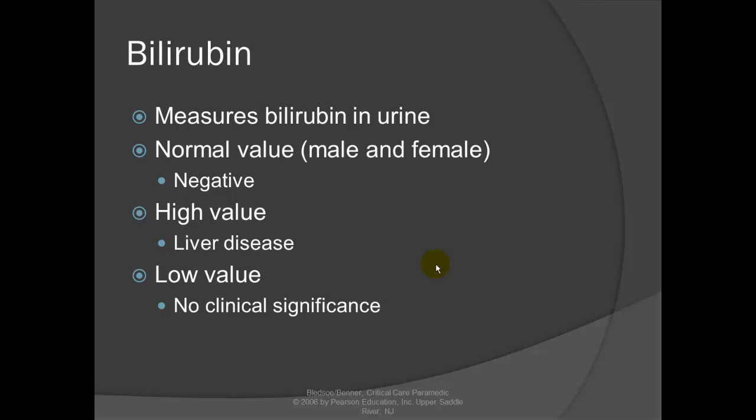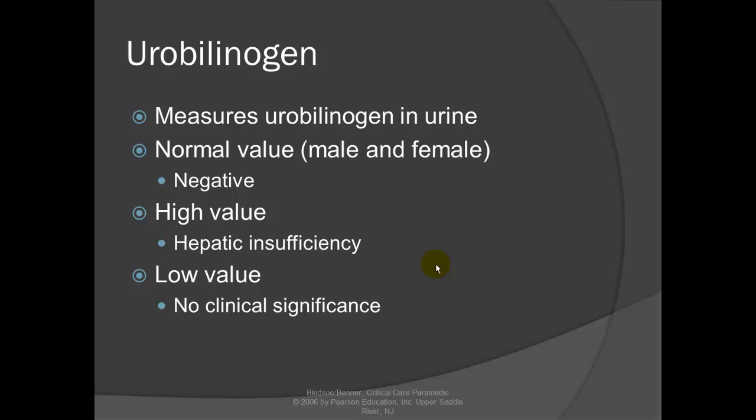Bilirubin: measures bilirubin in the urine. Normal value is negative. High values are suggestive of liver disease. Low value has no clinical significance. Urobilinogen: measures urobilinogen in the urine — a product of bilirubin production. Normal value is negative. A high value indicates hepatic insufficiency. Low value has no clinical significance.